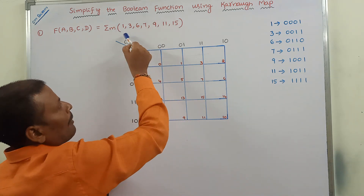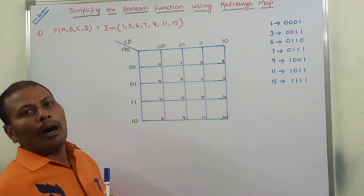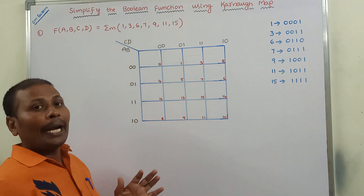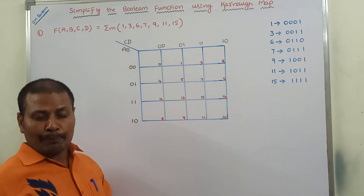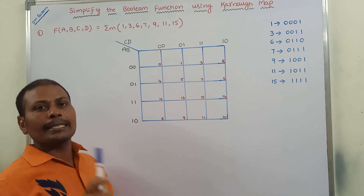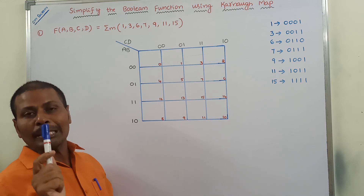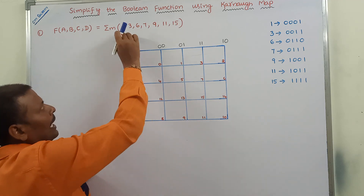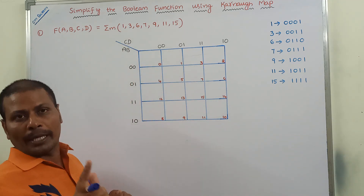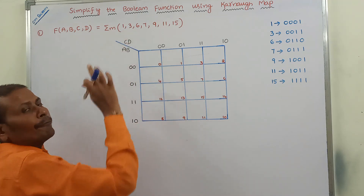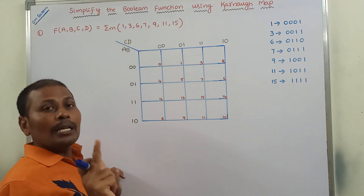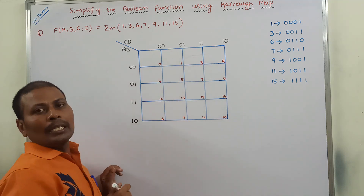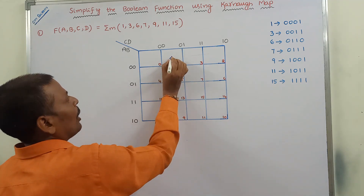First, we have to identify the min term, find the corresponding cell, and place a 1 in that cell. I am taking min term 1 — identifying cell number 1 and placing 1 there.